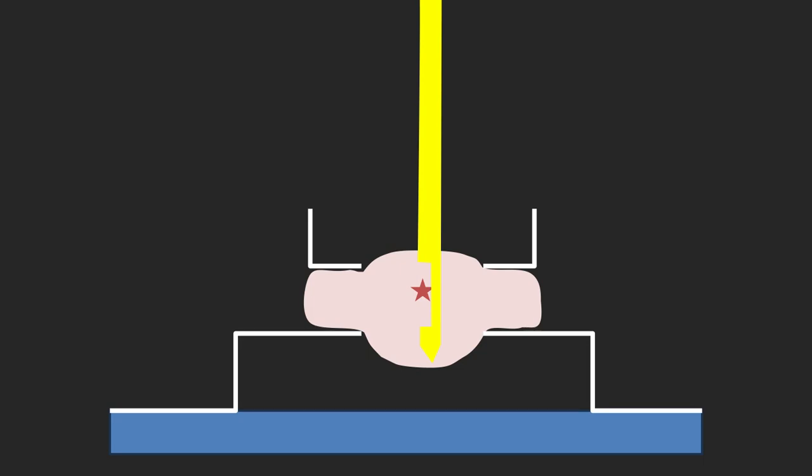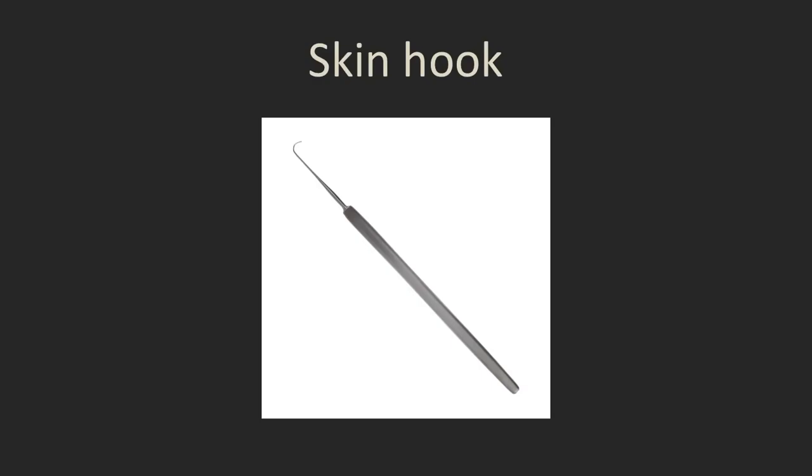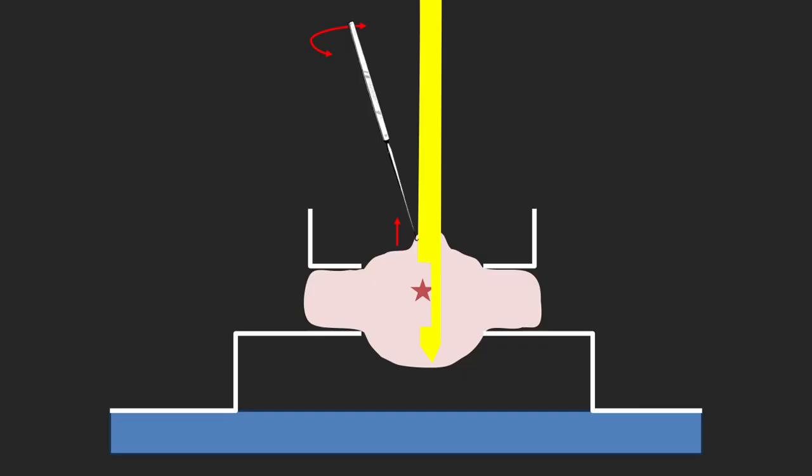So if your chamber is up and above the breast here, when you've deployed it, you can gently wind it in a little bit to get below the surface, or you can use a skin hook. So this is just something that comes from our surgical instrument department, and you just take the sterile skin hook after you've deployed the needle, but before you do the biopsies.